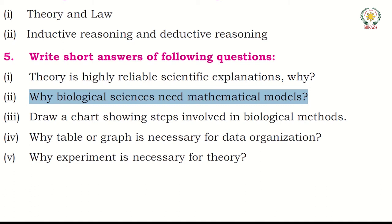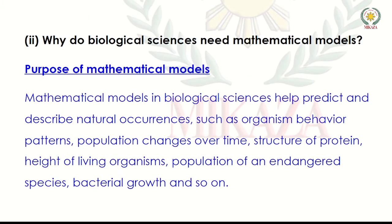Question number two: what is the need of mathematical models? Mathematical models mean graphs or mathematics. Mathematical models in biological sciences help predict and describe natural occurrences such as organisms' behavior patterns, population changes over time, structure of protein, height of living organisms, population of an endangered species, bacterial growth, and so on.